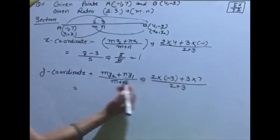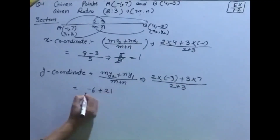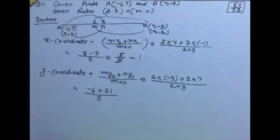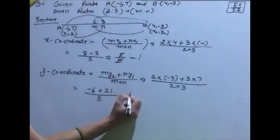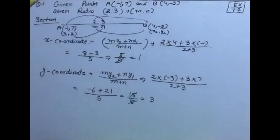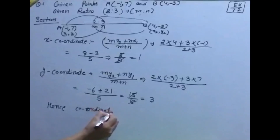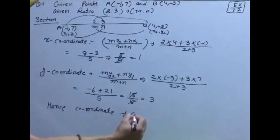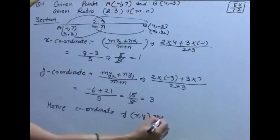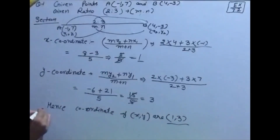यहाँ आएगा: 3×(-3) = -6, 3×7 = 21, divided by 5। यानि 21 - 6 = 15, upon 5 = 3। तो y-coordinate आया 3। Hence, required coordinate of point (x, y) = (1, 3). This is the final answer।